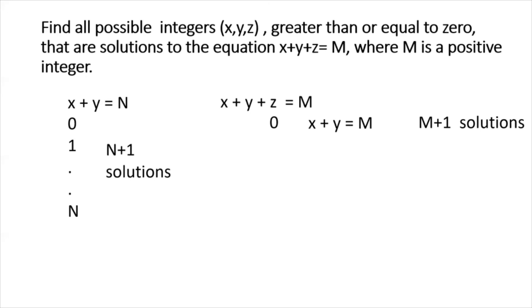So, now, for z equal to 0, we have a total of m plus 1 solutions. So, what about z equal to 1? Now, x plus y is equal to m minus 1. And again, going by the first simpler two-variable problem that I established, this one would have m solutions. So, it's m minus 1 plus 1. That gives us m.